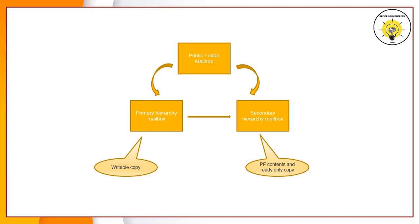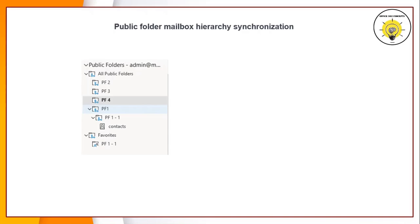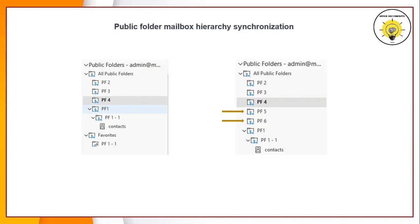The public folder hierarchy is copied from the primary hierarchy mailbox to all other public folder mailboxes, but these will be read-only copies. Only the primary public folder mailbox stores a writable copy of the public folders hierarchy. This hierarchy is synchronized across all the public folder mailboxes and must be frequently synchronized so that end users can get an up-to-date view of the public folders hierarchy. For example, if an administrator creates a public folder in Exchange Admin Center, these public folders should be updated within end users' email applications.